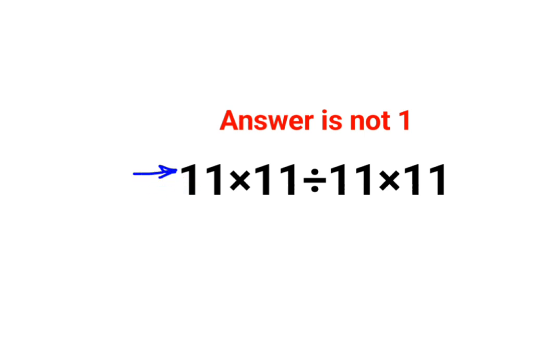Now the reason for that is, 11 multiplied by 11 is 121. And here also 11 multiplied by 11 will get you 121. When you divide both of them, the answer can be 1.